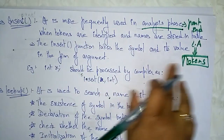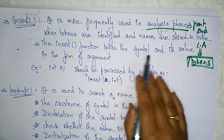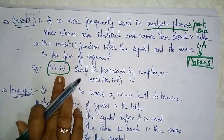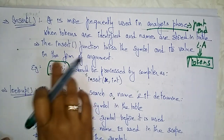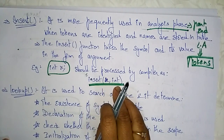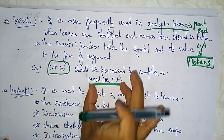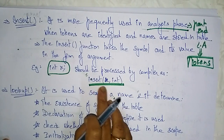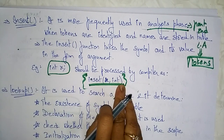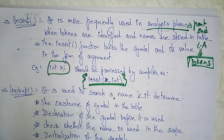The insert function takes the symbol and its values in the form of arguments. For example, if you declare 'integer x', how will this value be stored in the symbol table? Like this: insert(x, int). With the help of this operation, the value of x will be stored in the symbol table. So the symbol table stores it in this format: insert(x, integer), where integer is the data type and x is the variable.